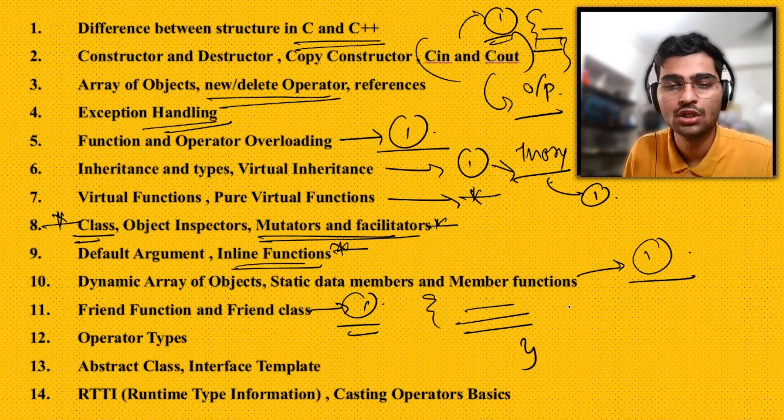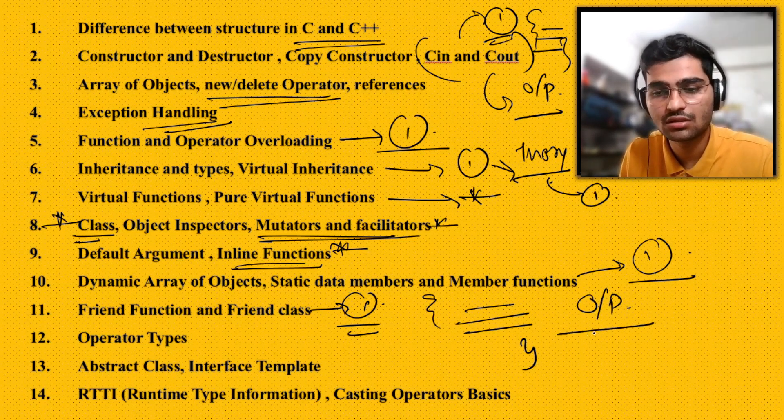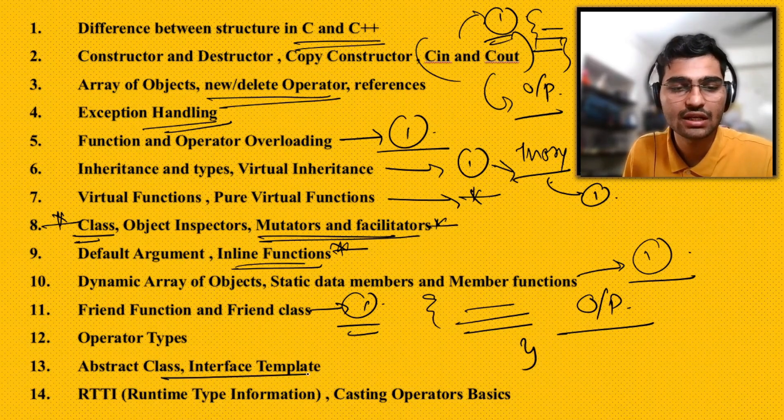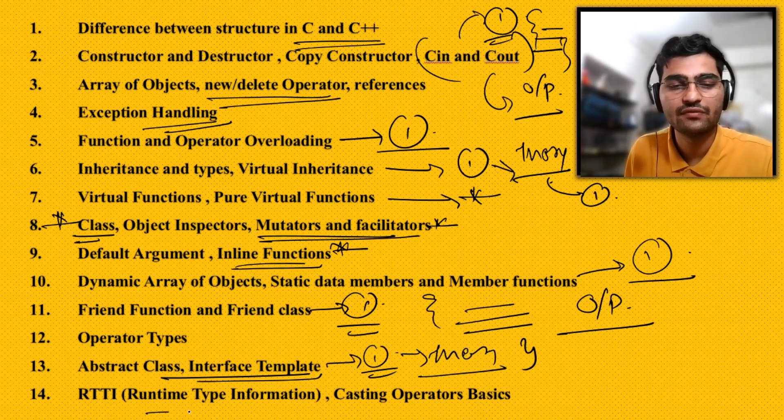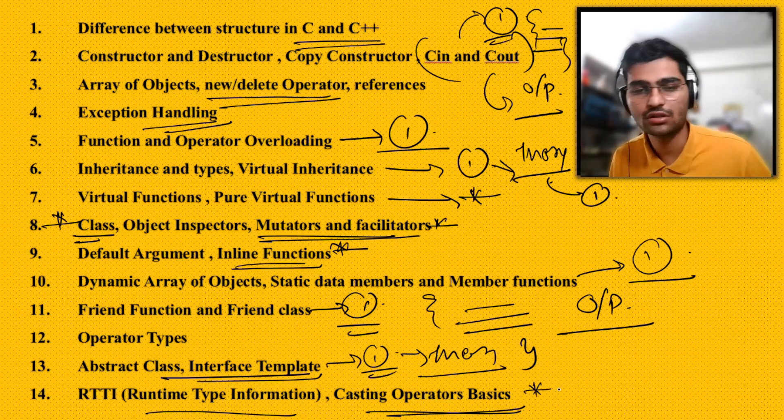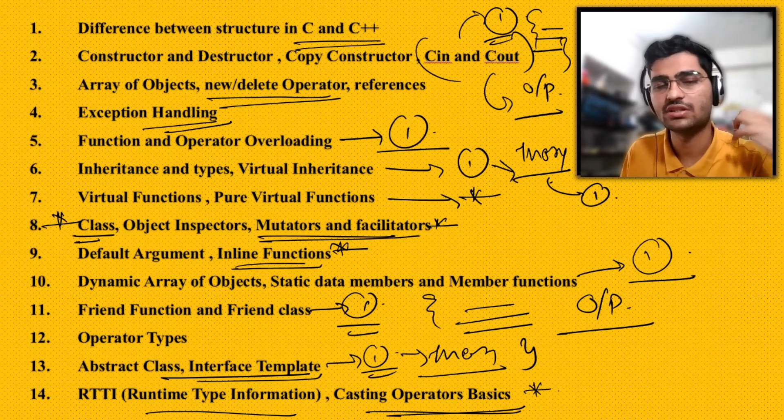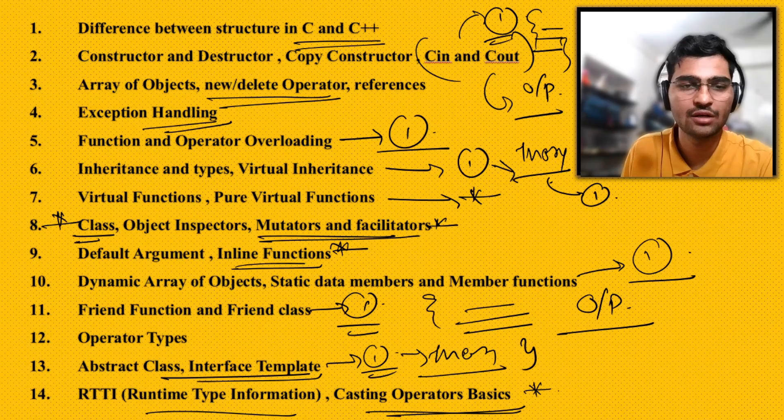Default argument, inline function - very important. Dynamic array of objects, static data members and member functions - I got one question. Friend function and friend class - one question where they give a snippet and you have to identify the correct output. Abstract class, interface template - I got one theory question. Runtime Type Information, casting operator basics - I studied it but there was no question for me.